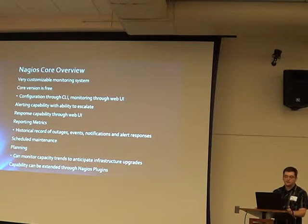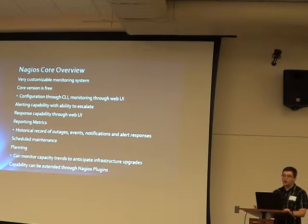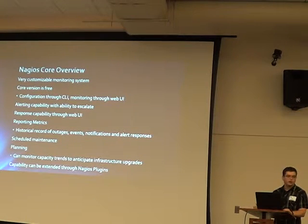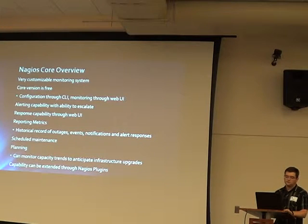Nagios has alerting capability with the ability to escalate, and response capability through the web. When an alert generates, somebody can log in, put down what the alert was, indicate they're working on it, and add status updates right in the program. It also has reporting metrics — you can pull up a host and see a historical record of outages, events, alerts, and notifications triggered on that system.